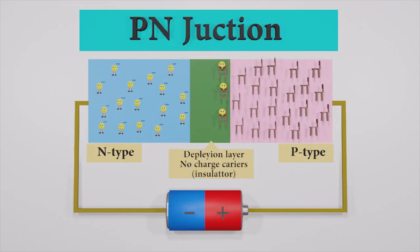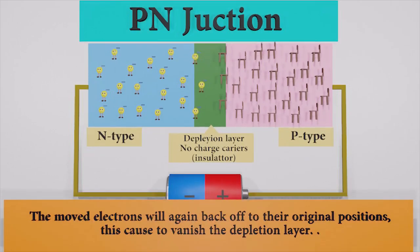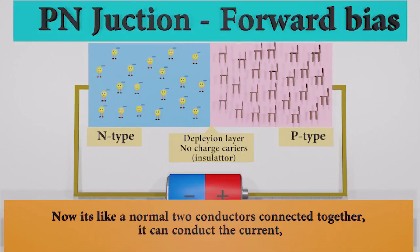If we connect the P-side to the positive terminal of a battery and N-type to negative terminal, the moved electrons will again back off to their original positions. This goes to vanish the depletion layer. Now it's like normal two conductors connected together. It can conduct the current.